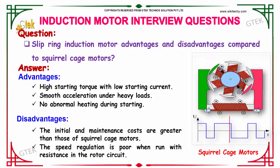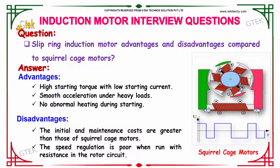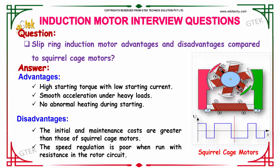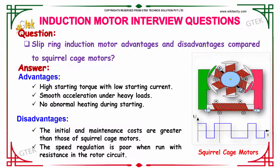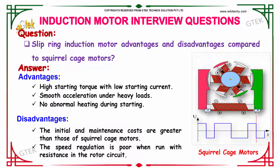We have the slip ring induction motor advantages and disadvantages, compared to squirrel cage motors. The advantages are high starting torque with low starting current, smooth acceleration under heavy loads, and no abnormal heating during starting.